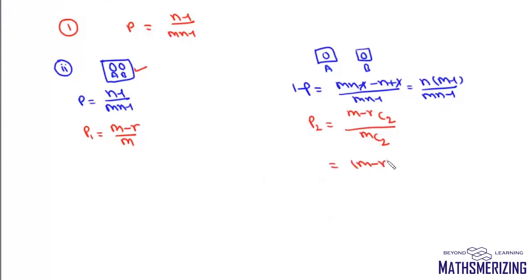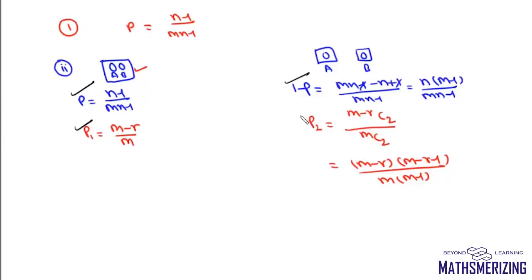The (m-r) choose 2 expands to (m-r)(m-r-1)/2, and m choose 2 gives m(m-1)/2, so the 2's cancel. If they are together, the probability they are in the remaining m-r purses is (m-r)/m. If they are not together, it is (m-r)(m-r-1) / (m(m-1)). We now need to find the probability they are in the same purse given neither was in the r examined purses — this becomes a Bayes theorem problem.